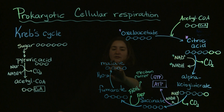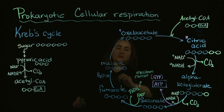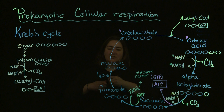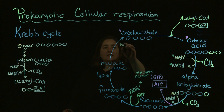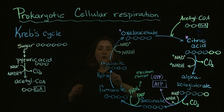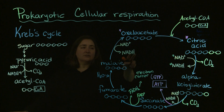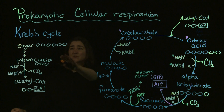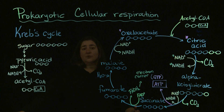Our fumarate is going to be converted into malate with a little bit of water added. Then we're going to complete our cycle: malate, which is again four carbons, still has a few electrons to donate. Those electrons are going to be collected, and once we've collected those last electrons, we go back to being oxaloacetate. Therefore we've completed our cycle, which is why this is called the citric acid or Krebs cycle.